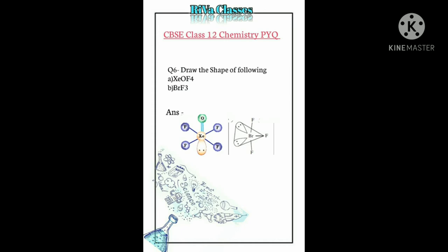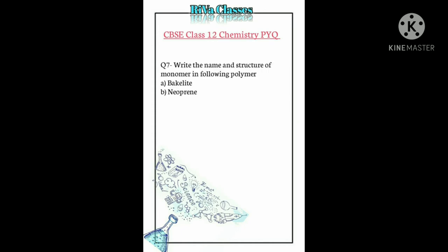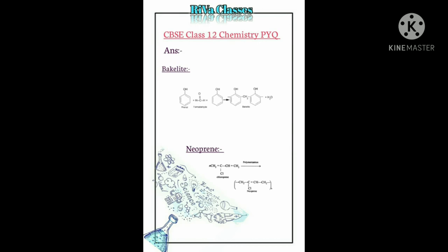Question number seven: Write the names and structures of monomers in the following polymers — (a) Bakelite and (b) Neoprene. Answer: Bakelite is a thermosetting polymer made up of phenol and formaldehyde. Neoprene is a polymer of chloroprene, that is 2-chloro-1,3-butadiene.